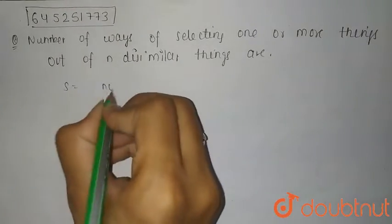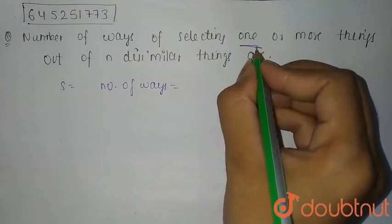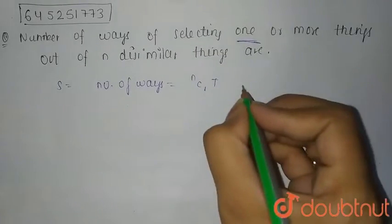So first of all, we have to find number of ways. If you want to select one thing out of n things, it will be nC1. If you want to select two things out of n things, it will be nC2. When you want to select three things, it will be nC3, and so on up to when you want to select n things out of n things, it will be nCn.